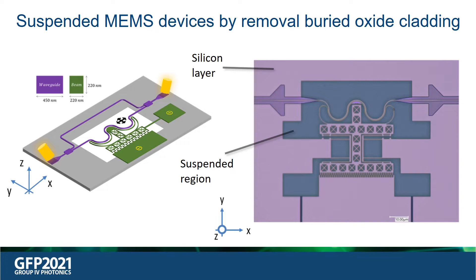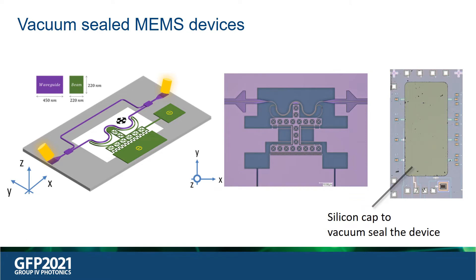The silicon device layer is shown in purple, whereas the suspended region, where the buried oxide cladding is removed, is shown in blue. The MEMS phase shifter is also vacuum sealed using a silicon cap. A microscope image of one such packaged device is shown here.